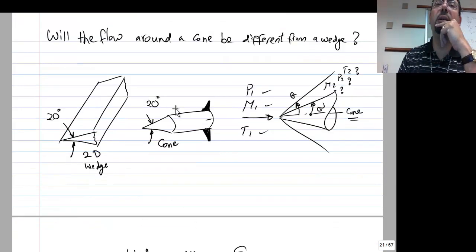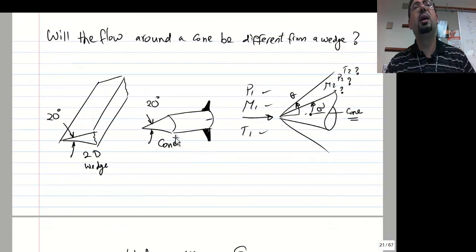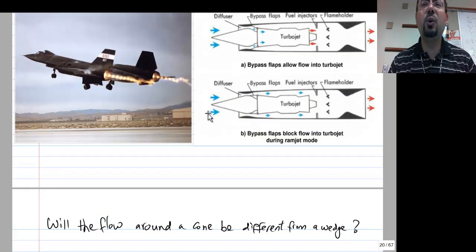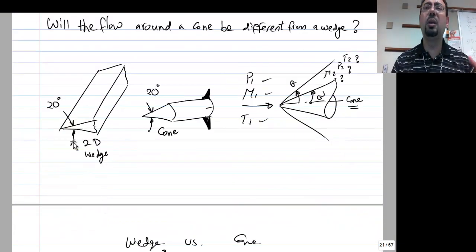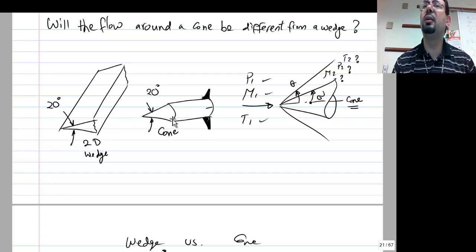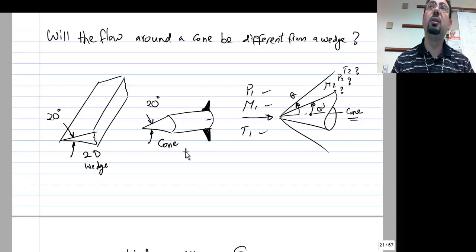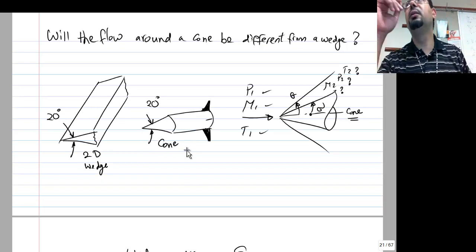Now an important question: the aircraft inlets are actually cones — 3D axisymmetric — but in homework we always design wedges, which are 2D. Will the flow over a 2D wedge be different from the flow over a cone? Yes — the equations we have right now do not solve the flow over a cone.